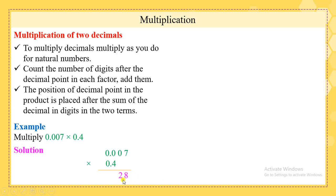Counting 4 places from the right: we have empty places that we fill with zeros. Locate your decimal point — we cannot leave the whole number part empty, so we put a zero there as well. Our product is 0.0028.